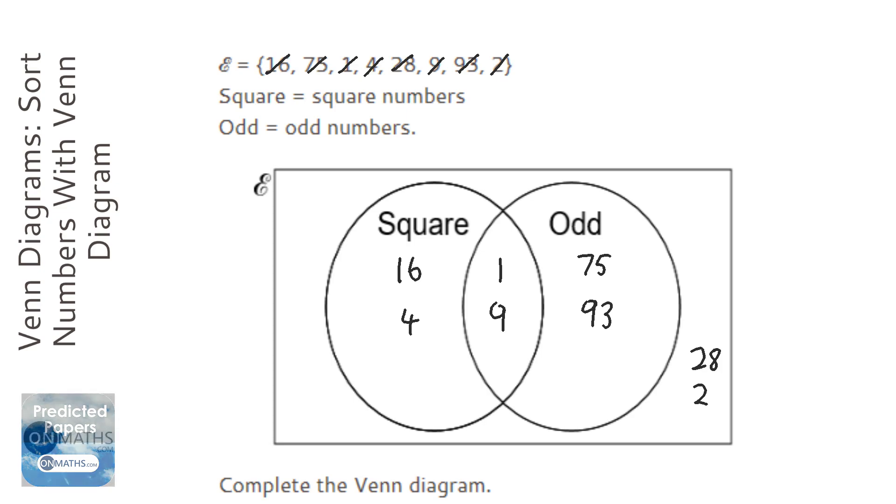And I like to just add them up, find out how many numbers we've got in our Venn diagram. 1, 2, 3, 4, 5, 6, 7, 8. And find out how many numbers we should have. 1, 2, 3, 4, 5, 6, 7, 8. So we haven't missed any, because it's quite easy with this type of question to miss a number out.